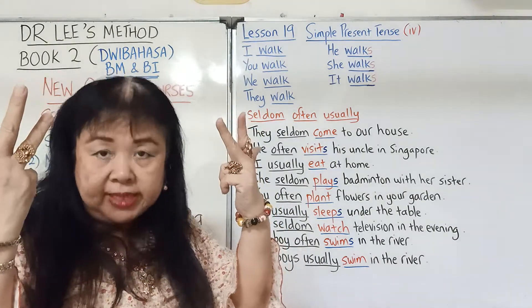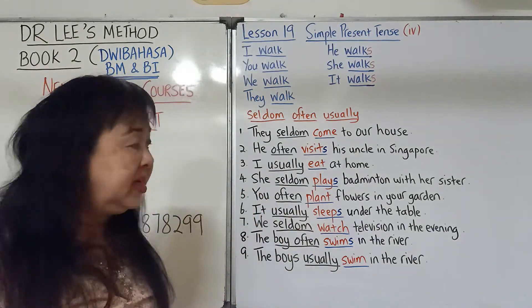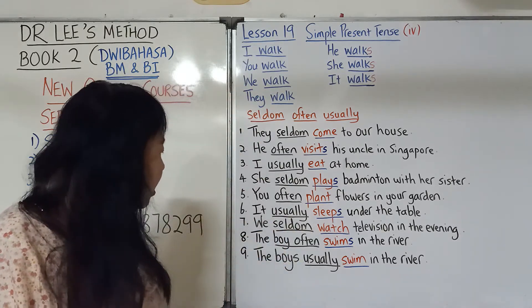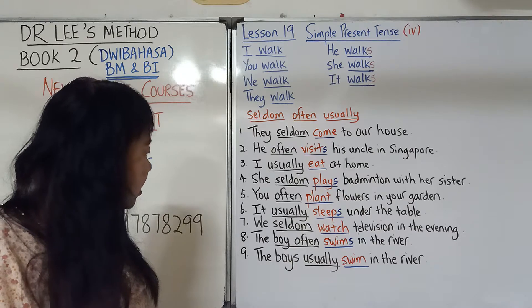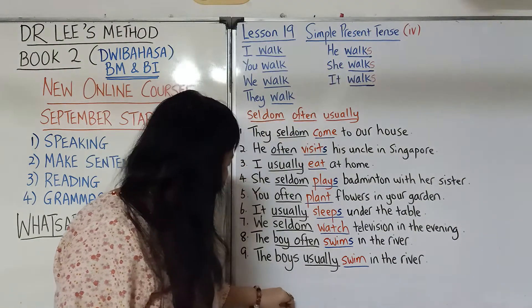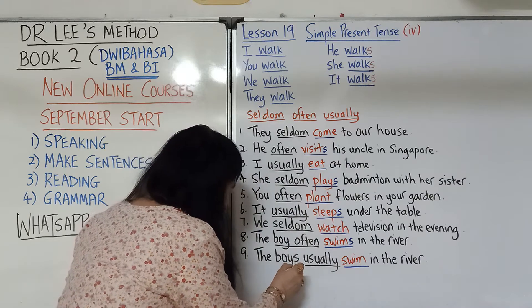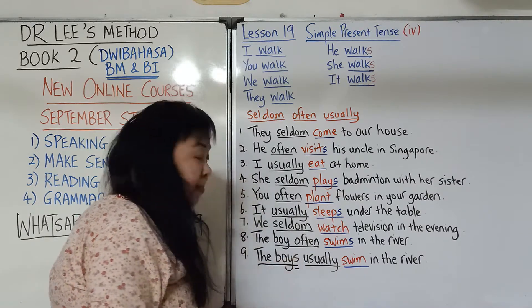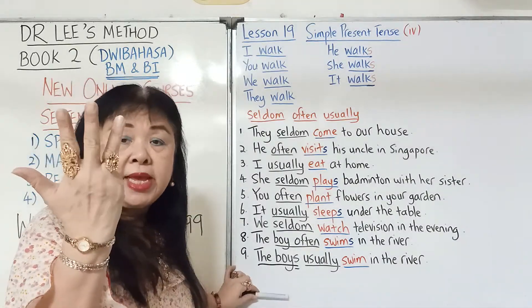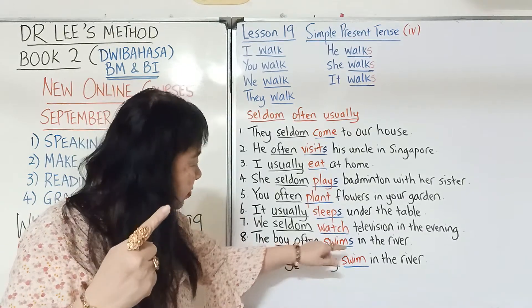'You often plant flowers in your garden.' You — we do not put an S to the verb. 'We seldom watch television in the evening.' We — cannot put an S. 'The boy often swims in the river.' The boy means one boy, which means 'he' — so the verb you must put an S. But 'the boys' with an S means many boys, which means 'they' — and for they, the verb cannot take an S. So for one boy, you must put an S on the verb; for many boys, you cannot.